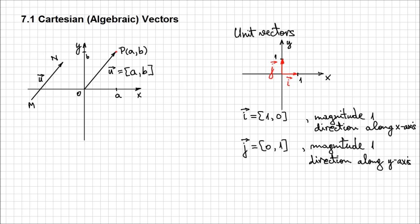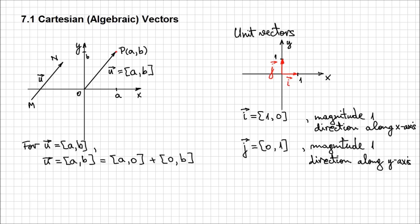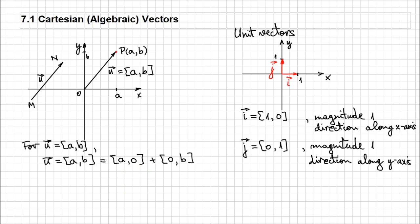These unit vectors are very useful because we can use them to describe algebraic vectors. For any Cartesian vector u, denoted with a and b in square brackets, we can write it as a sum of its vertical and horizontal components. The horizontal component is [a, 0], plus the vertical component, which has all the y values and no x value, so plus [0, b]. Because a plus 0 and 0 plus b give the same result, and these are your horizontal and vertical components.